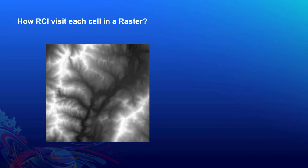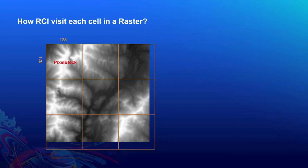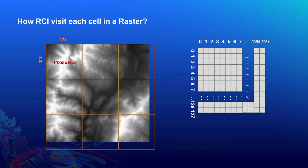When iterating through raster data, RCI leverages pixel blocks to make sure access to individual cells is efficient. When RCI iterates through each pixel block, that pixel block is already loaded into memory. For example, with a raster and a pixel block size of 128×128, RCI starts from the top-left corner and goes through each cell in the pixel block row by row, as indicated by the green arrow.